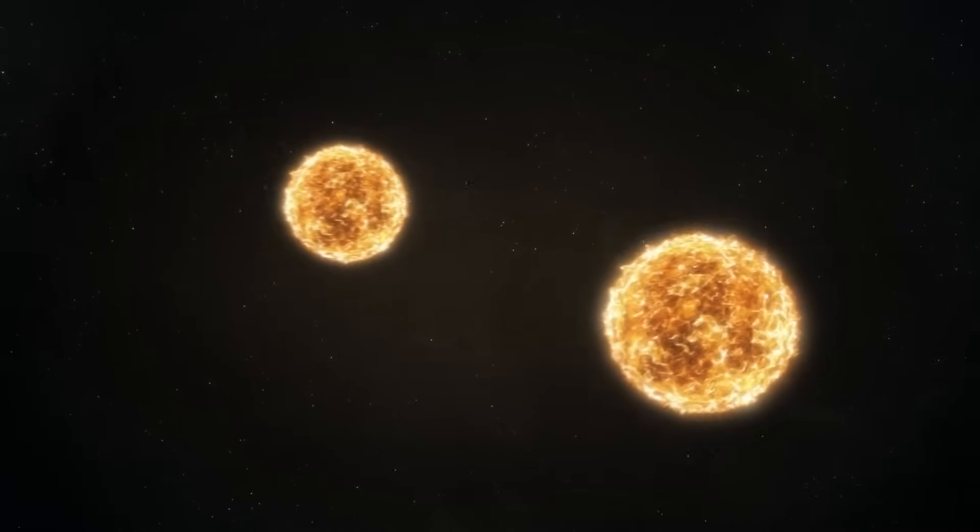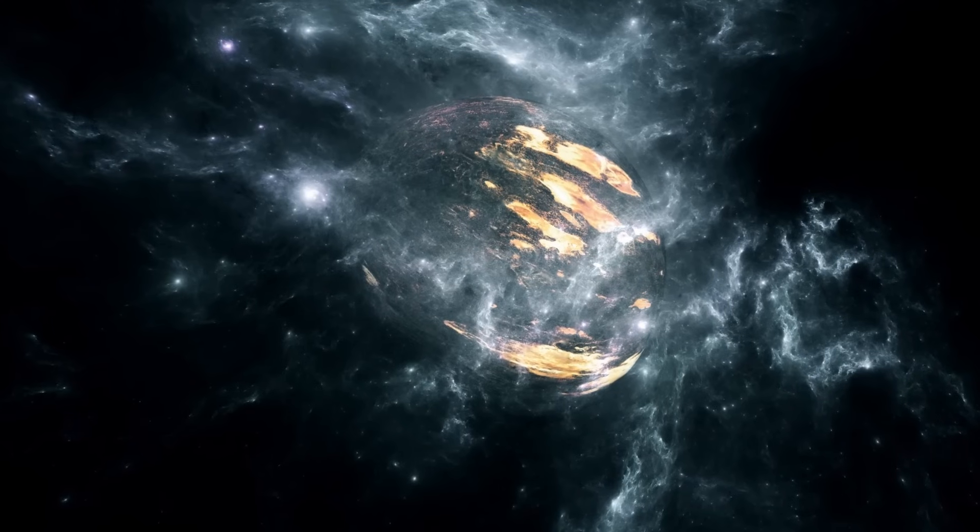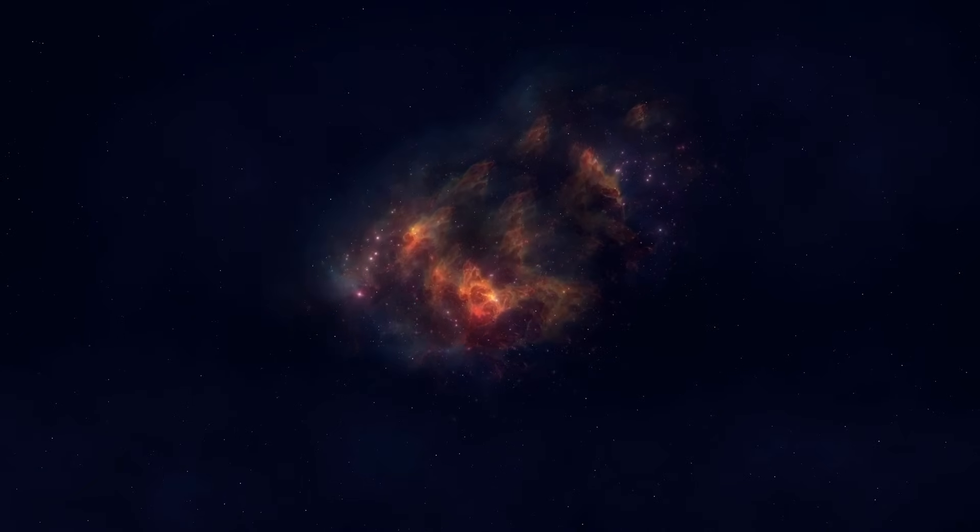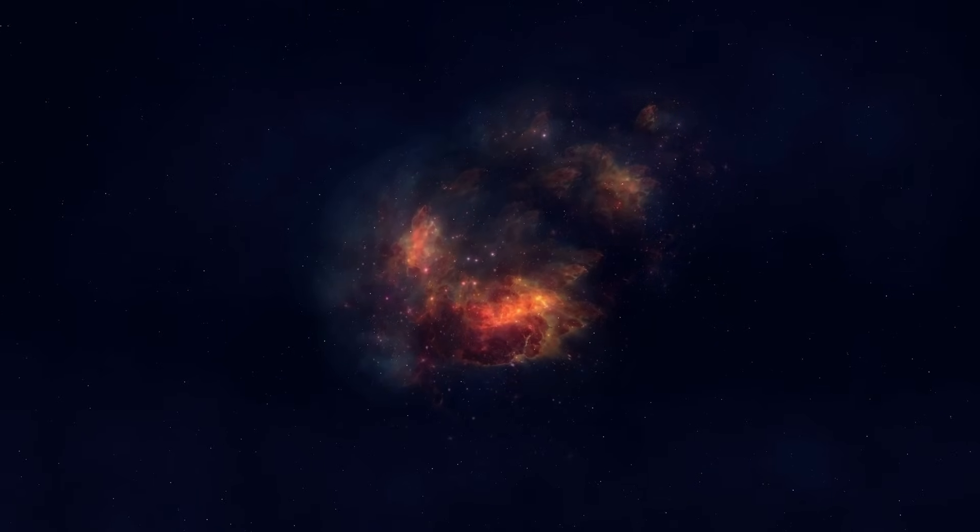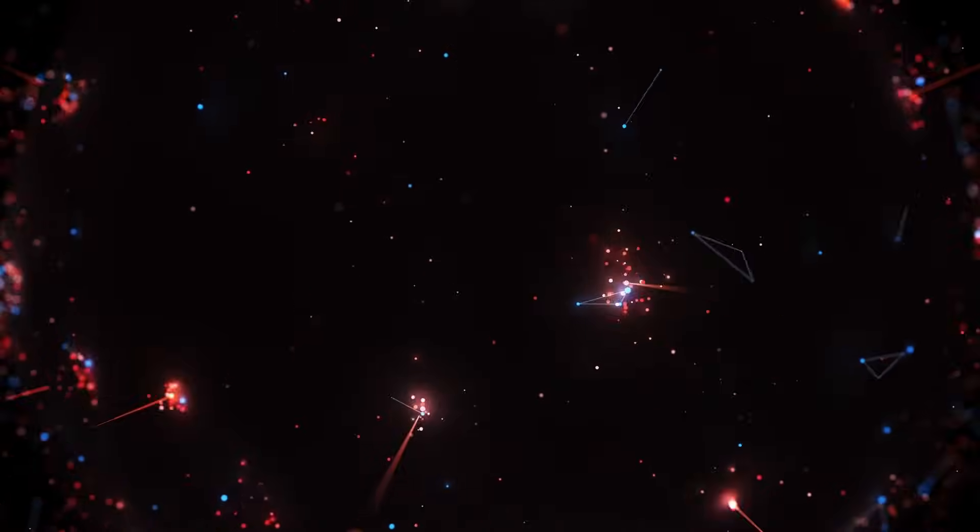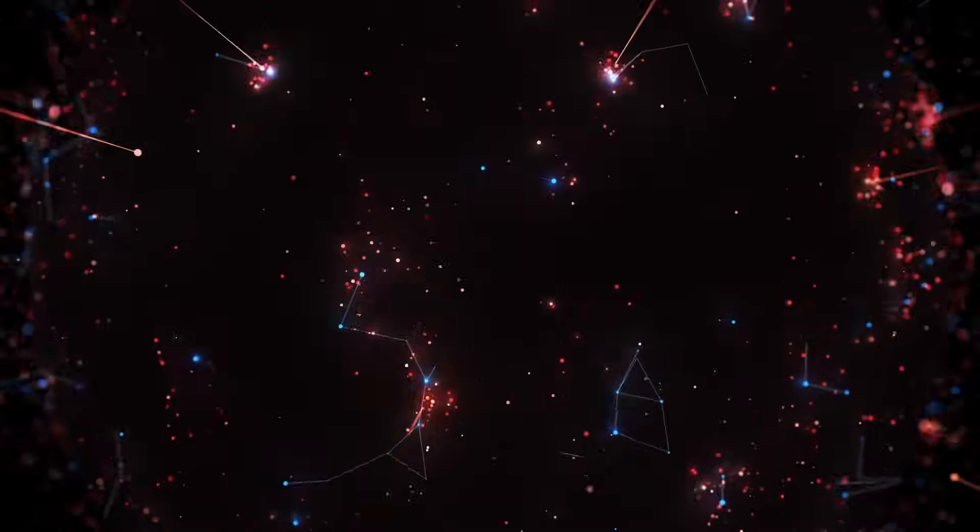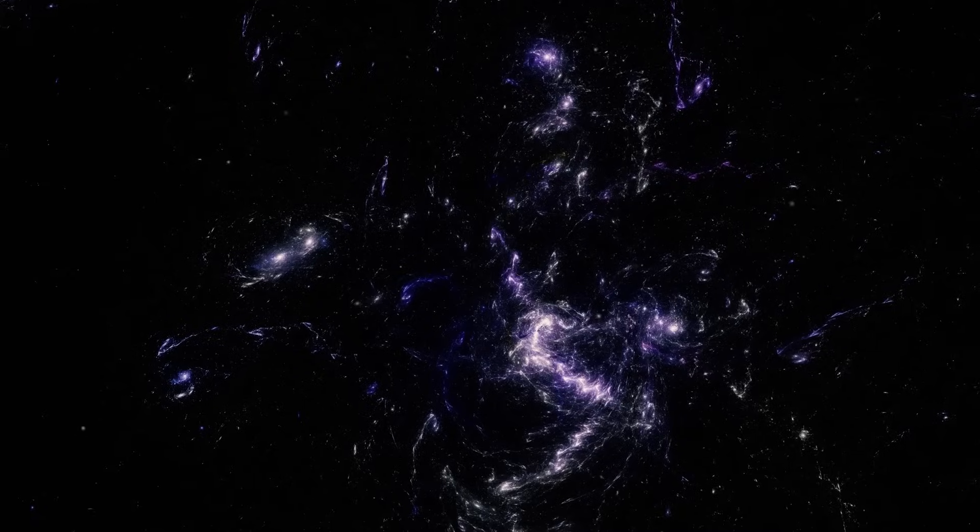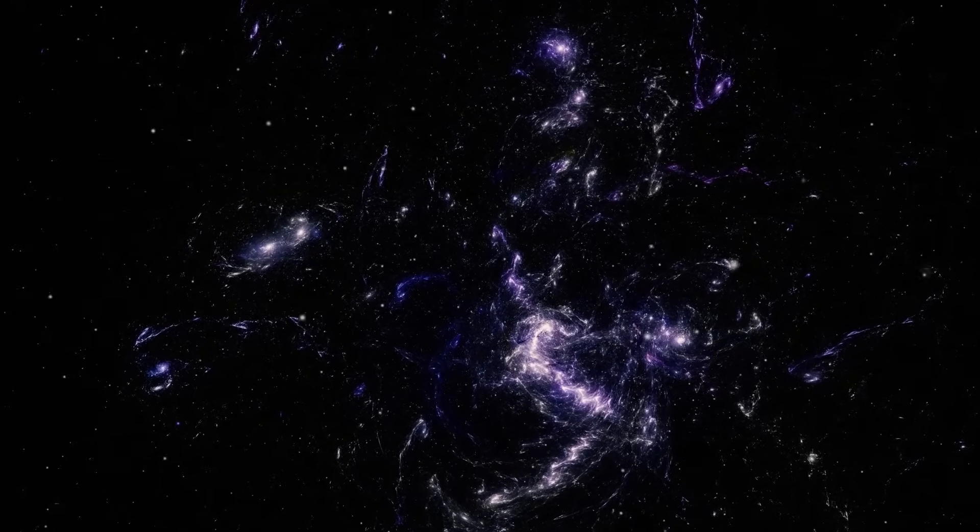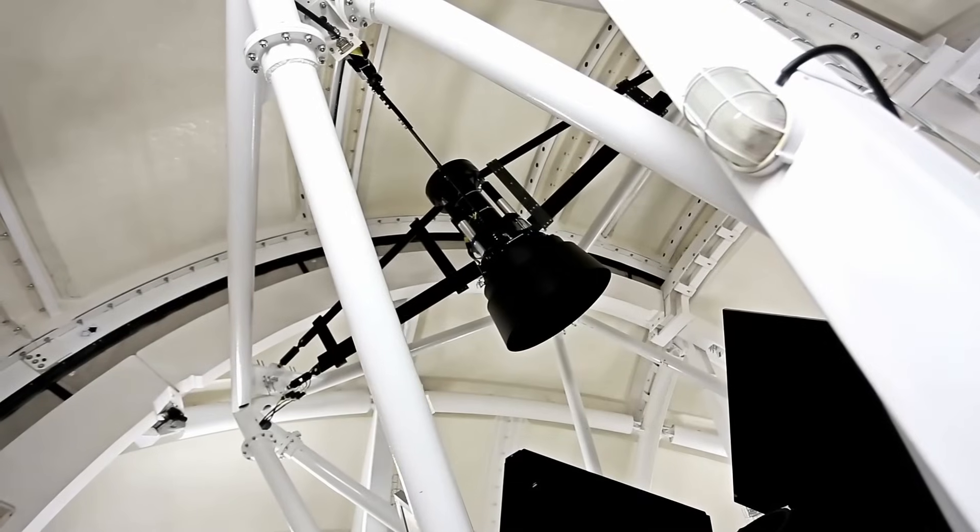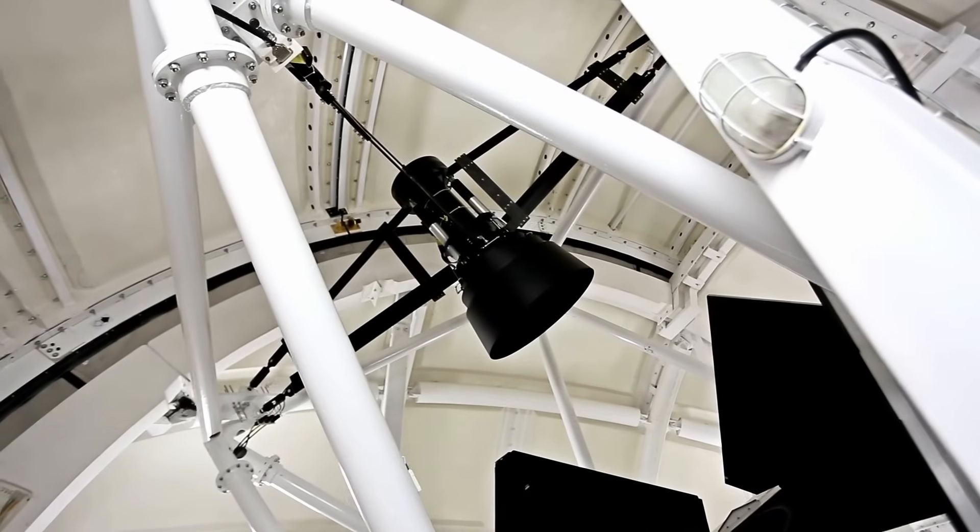The James Webb Space Telescope was built to look backward in time, to reveal how the universe began. But instead, it may have shown us something far more terrifying: that our universe is not alone, that impossible galaxies, phantom mass, reversed patterns, unknown rhythms, and unexplained echoes are not anomalies but signals—signals that chip away at everything we thought we knew. The comforting illusion that we understand where we are, when we are, and what we are. A Nobel Prize-winning physicist warned us: This is not our universe. And maybe that's the truth we were never meant to face.